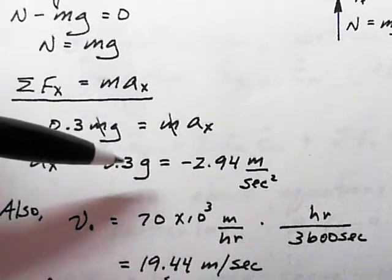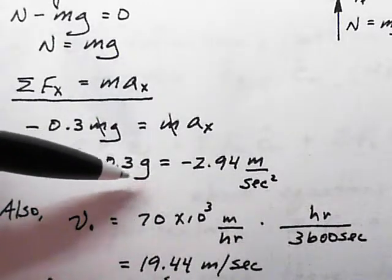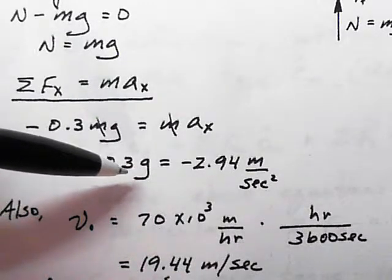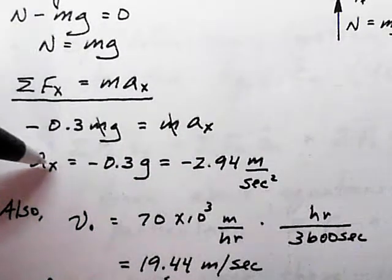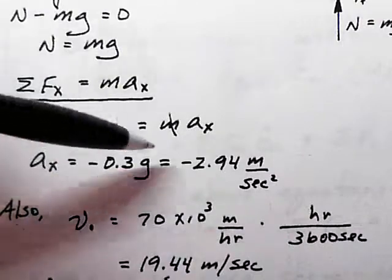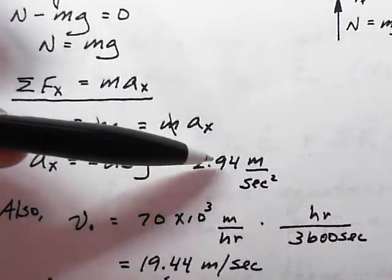g is the acceleration of gravity at 9.81 because we're in metric units, and so the acceleration in the x direction that will bring us to impending slip is minus 2.94 m/s².